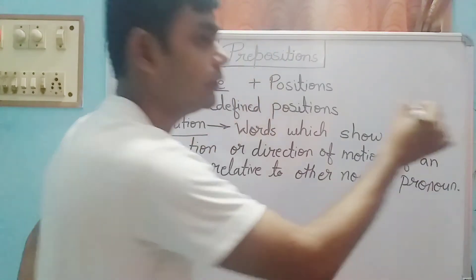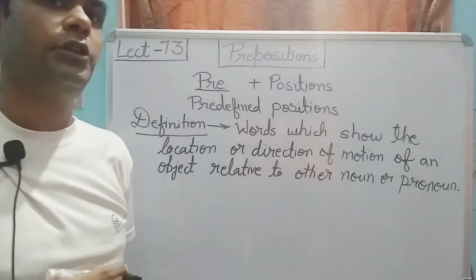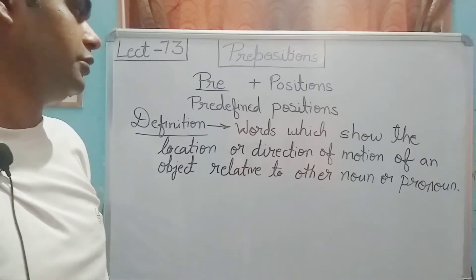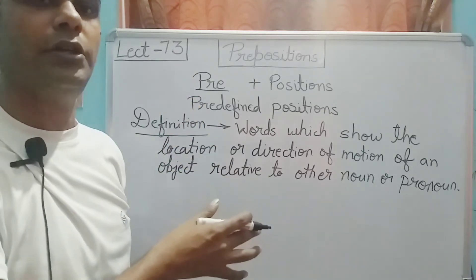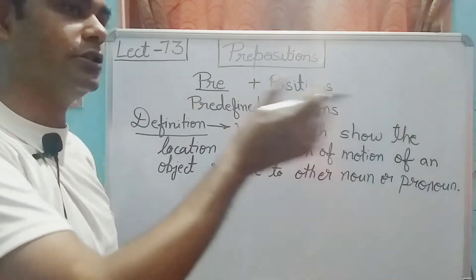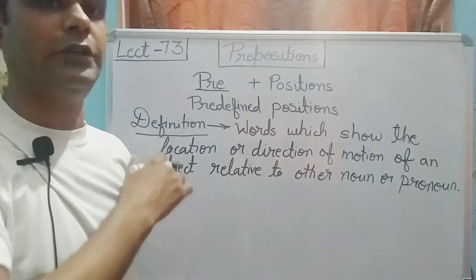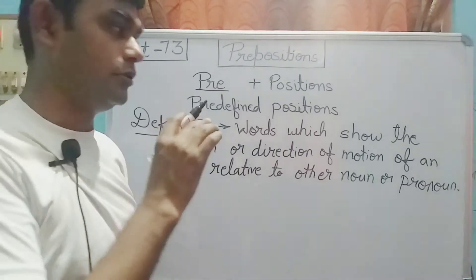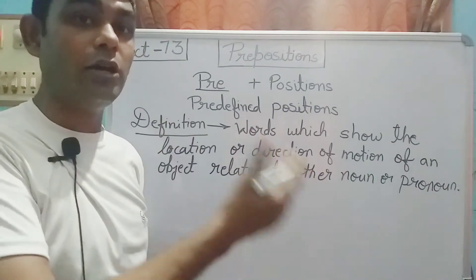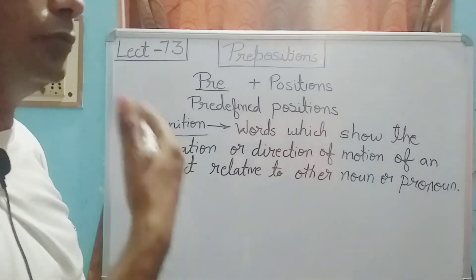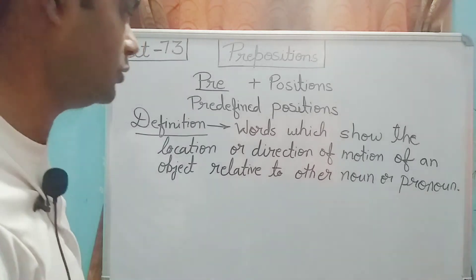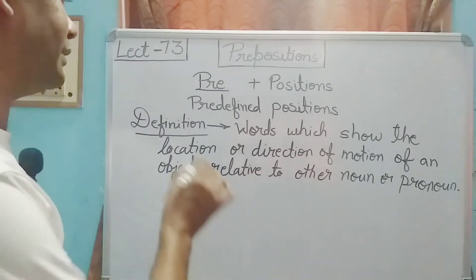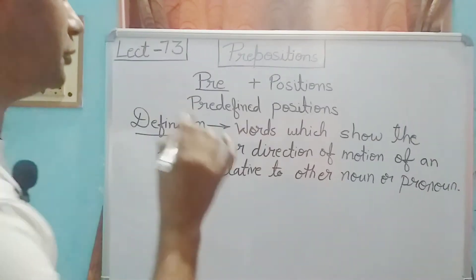Means koi bhi object kisji dousre object ke respect me kis jaga pe rukha hai, ya kis jaga se kis jaga ki or moving condition me hai. Isthir hai ya move kar raha hai, or move kar raha hai to kis direction me move kar raha hai with respect to another object. To aise words ko hum kehte hain prepositions.